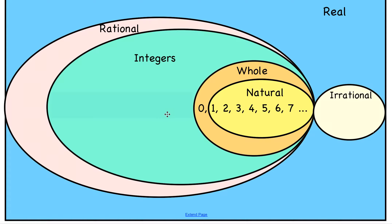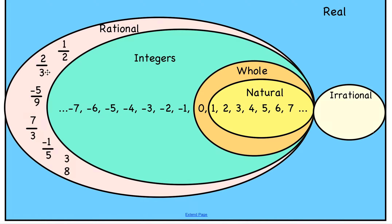Then you get a little older, maybe you have a bank account, and you learn about the concept of negative numbers. The integers are all the negative whole numbers, 0, and the natural numbers. So the circle just keeps getting bigger and bigger. The rational numbers are all the numbers that can be represented as fractions. When you learn about a number line, you recognize there are numbers between each of these integers — fractions, parts of numbers. Anything that can be represented as a fraction is a rational number.